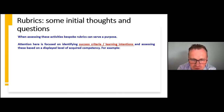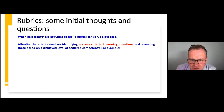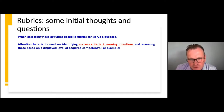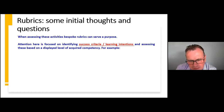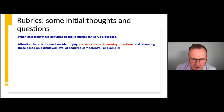In terms of a rubric, we really see it as anything that's tiered, with clear indicators of quality and clear indicators of expectation. It's clearly aligned with learning intentions and criteria for success. We see a real relevance for rubrics in the teaching of history and other subjects. The emphasis is on identifying success criteria and learning intentions, and how these might be displayed in terms of an acquired level of competency and capability.